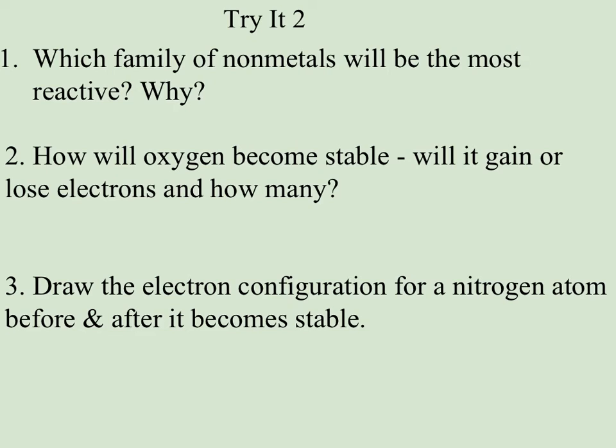So let's look at some examples with the nonmetals. Which family of nonmetals will be the most reactive? Well the smallest family of nonmetals is actually 8A, but remember they're already stable. So the most reactive family is going to be 7A, and that's because they're the smallest, so they're the most likely to gain electrons. And that's what makes nonmetals chemically reactive, is gaining electrons.